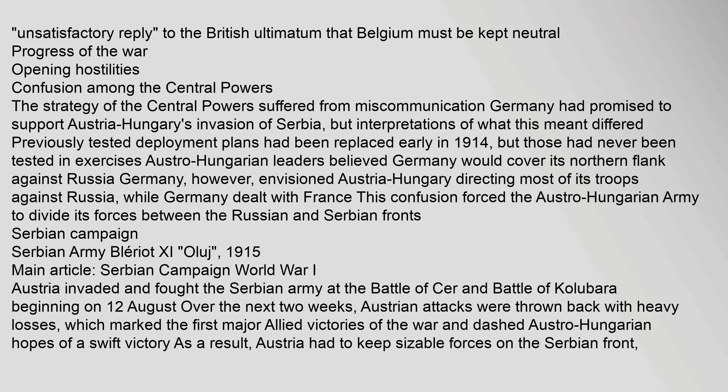The strategy of the Central Powers suffered from miscommunication. Germany had promised to support Austria-Hungary's invasion of Serbia, but interpretations of what this meant differed. Previously tested deployment plans had been replaced early in 1914 but had never been tested in exercises. Austro-Hungarian leaders believed Germany would cover its northern flank against Russia; Germany, however, envisioned Austria-Hungary directing most of its troops against Russia while Germany dealt with France. This confusion forced the Austro-Hungarian army to divide its forces between the Russian and Serbian fronts.